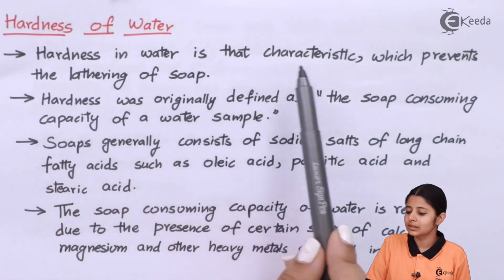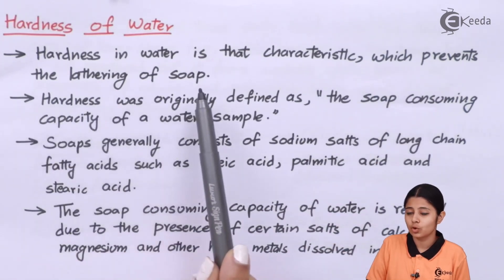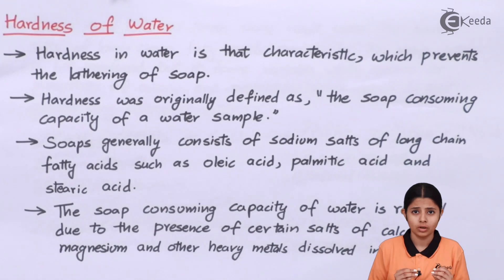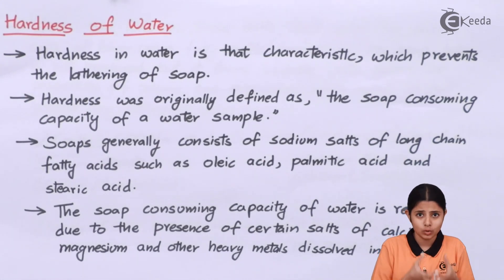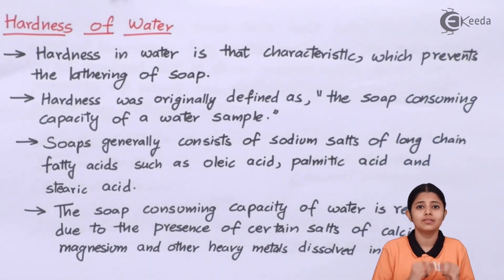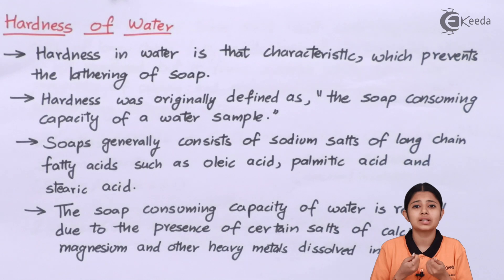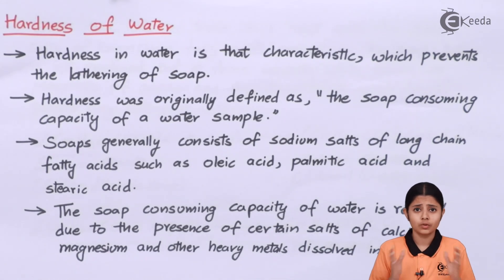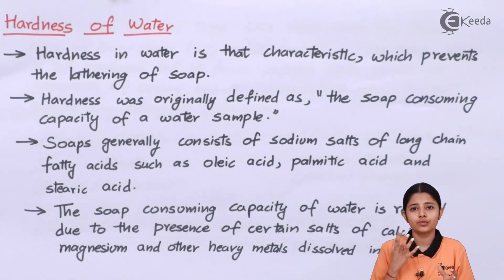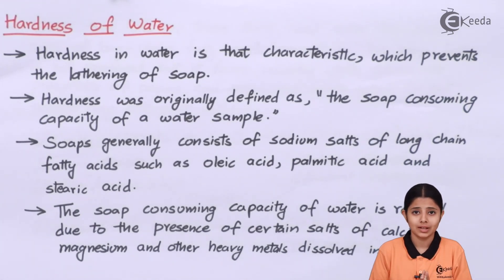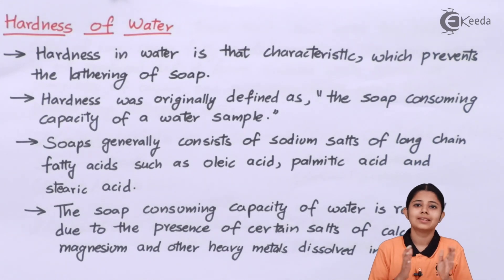Hardness of water. Hardness in water is that characteristic which prevents the lathering of soap. This is one of the most important characteristics of water. If you have an entire tank of water and you have to predict whether that water is hard or soft, you just take a sample, mix it with soap, and see the result. Soft water will always give lather to the soap, whereas hard water will produce a scum — a curd-like substance — and will not give lathering. This distinguishes hard water from soft water.